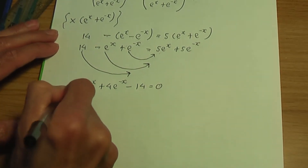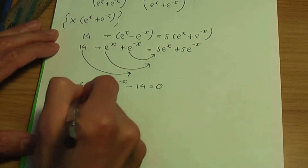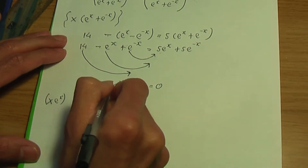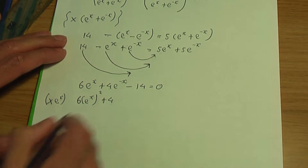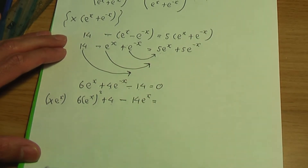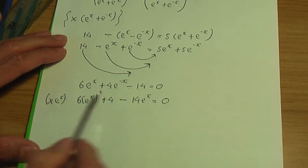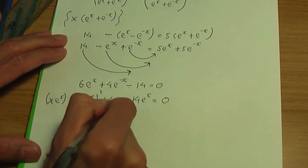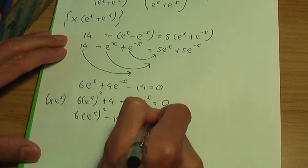To eliminate the negative power, multiply everything by e^x. So 6e^x times e^x is 6e^{2x}, plus 4e^{-x} times e^x is just 4, minus 14e^x equals 0. Rearranging gives 6e^{2x} minus 14e^x plus 4 equals 0.